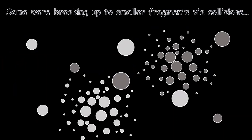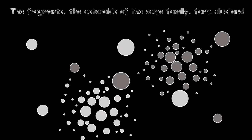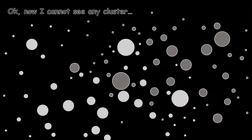The fragments, the asteroids of the same family, have similar orbits, so they form clusters. But the families disperse over time, they disperse and disperse until we cannot recognize any cluster.